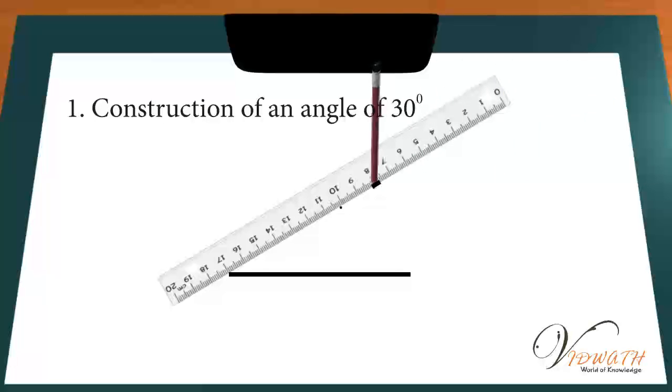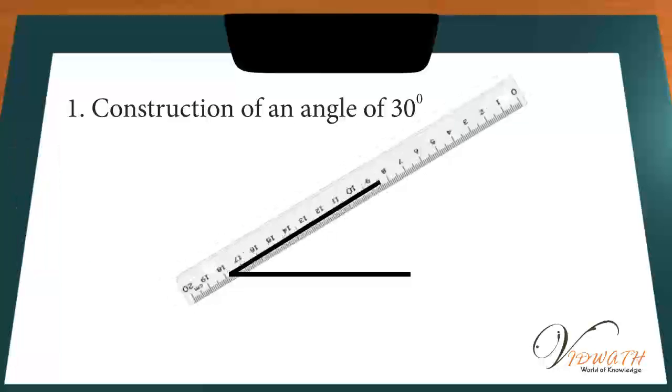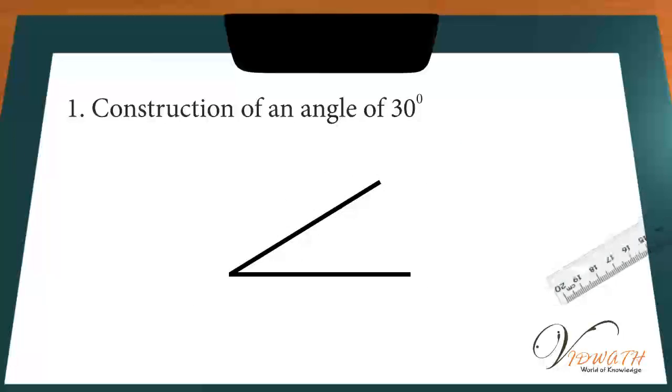Step 2: Remove the protractor and join points A and C using a scale. Step 3: Now, angle BAC is the required angle of measure 30 degrees.